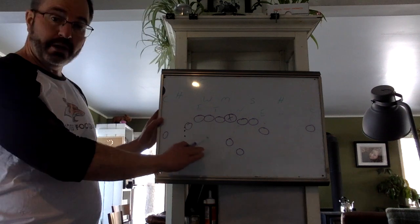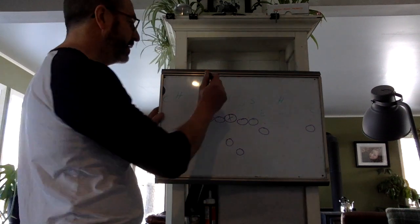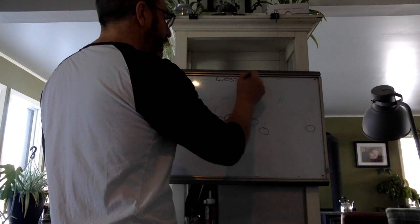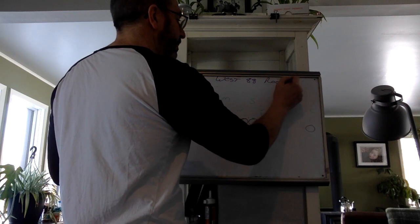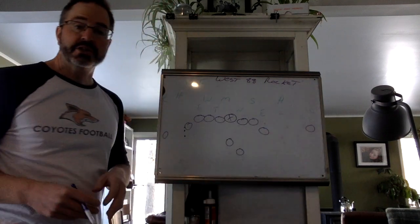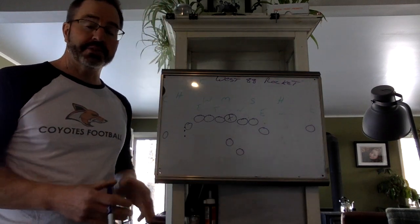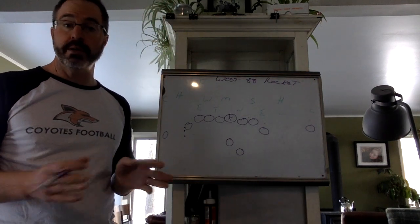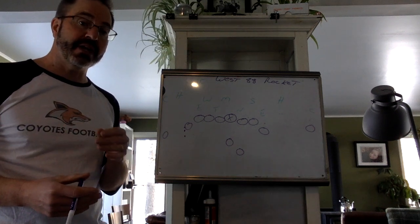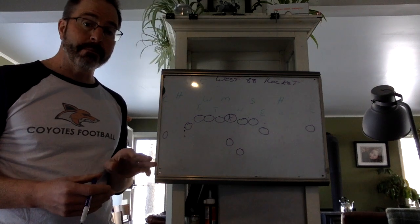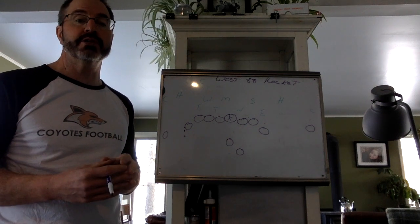The title of this play from here is going to be called West 88 Rocket. So we're going to be replacing the jet sweep in our offense with what we're going to be calling a rocket sweep, and it's designed to get outside faster and with more immediacy than we've been seeing with the jet sweep.